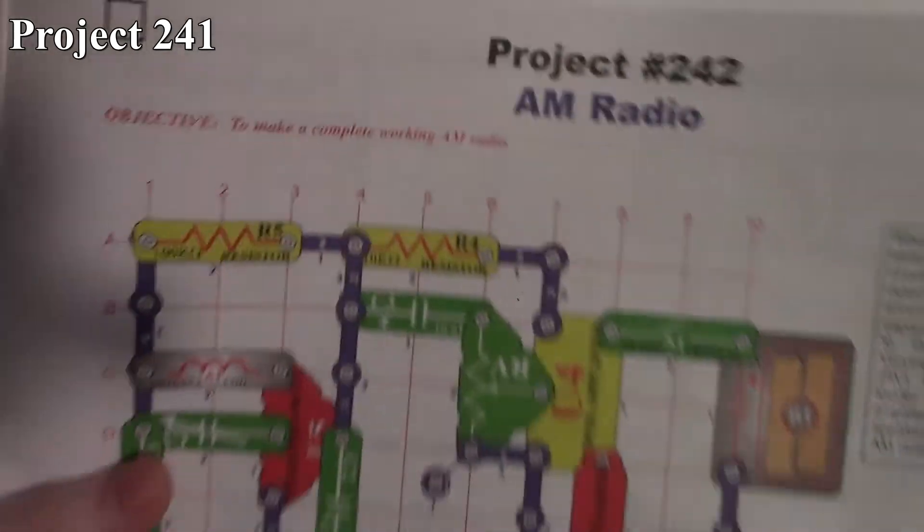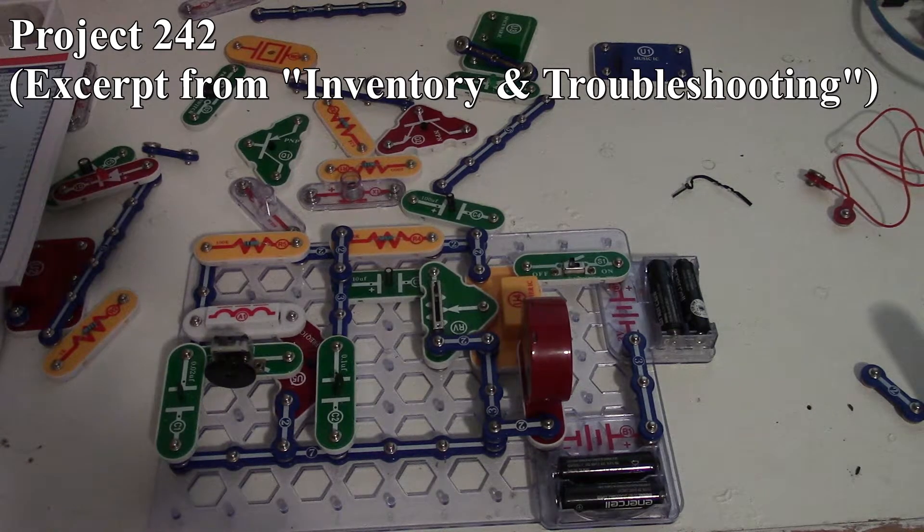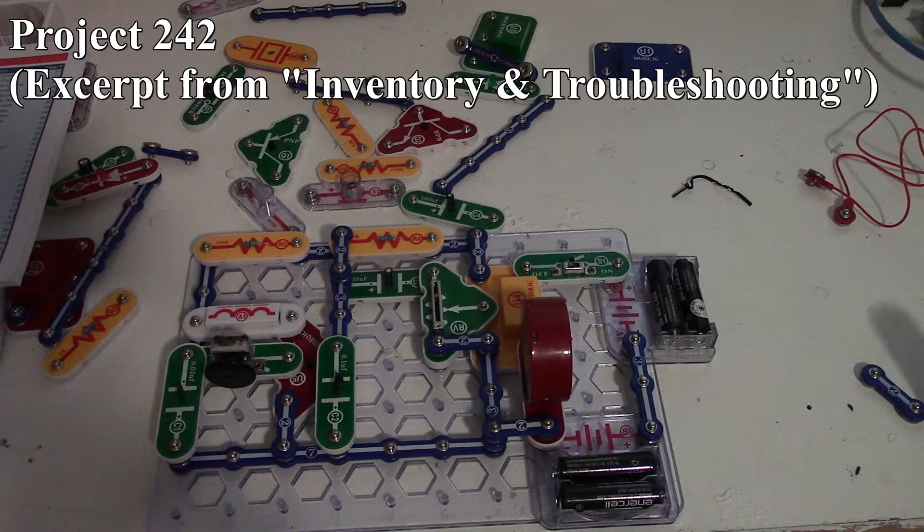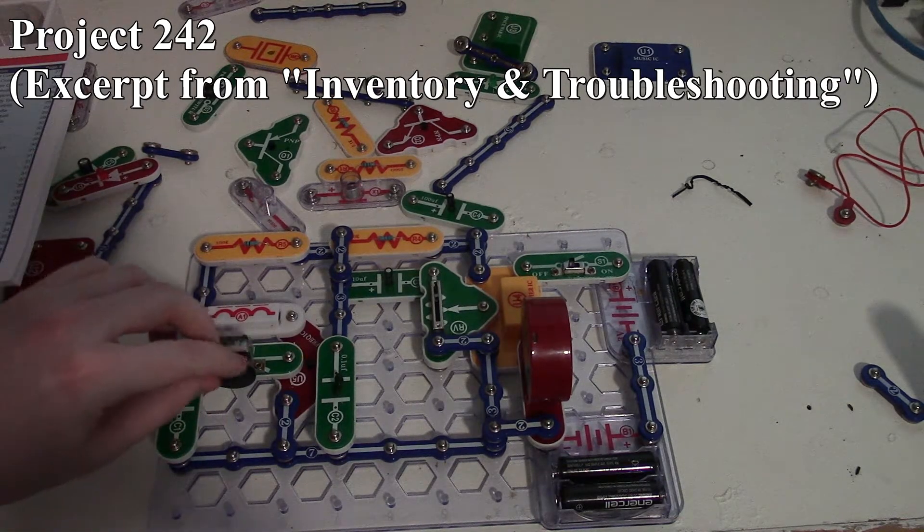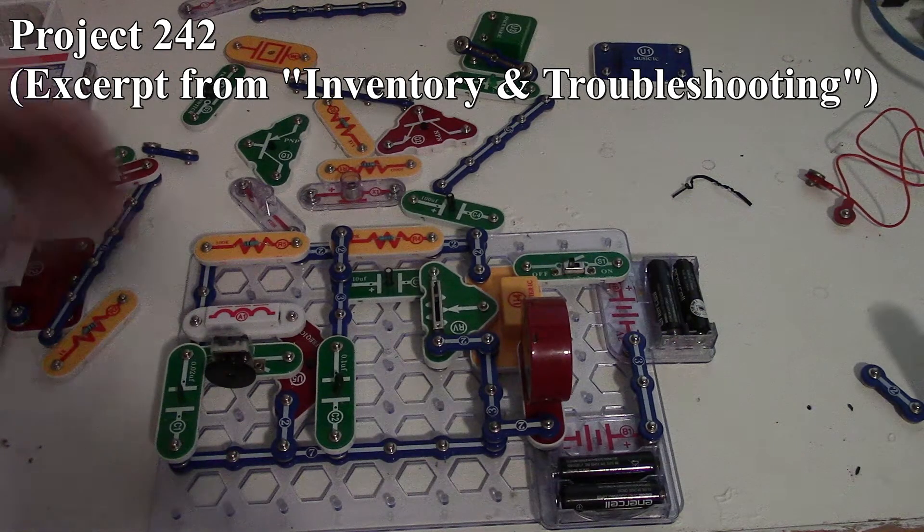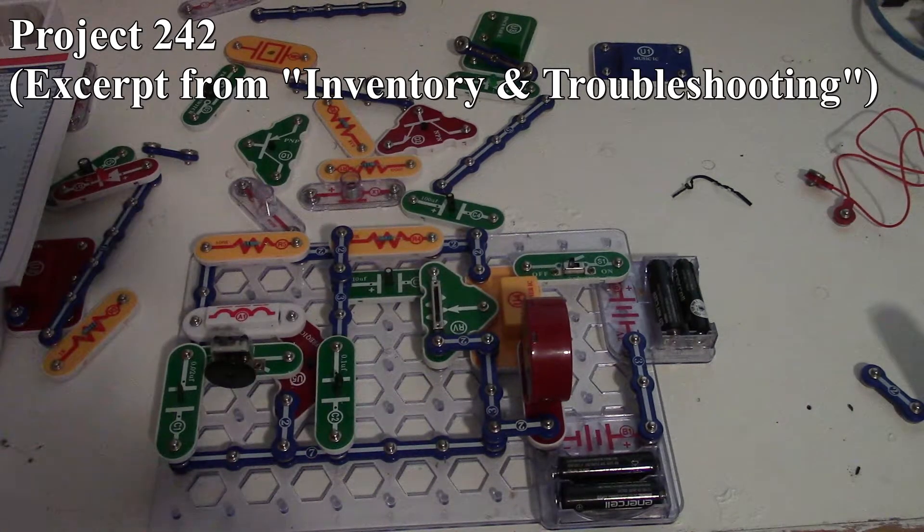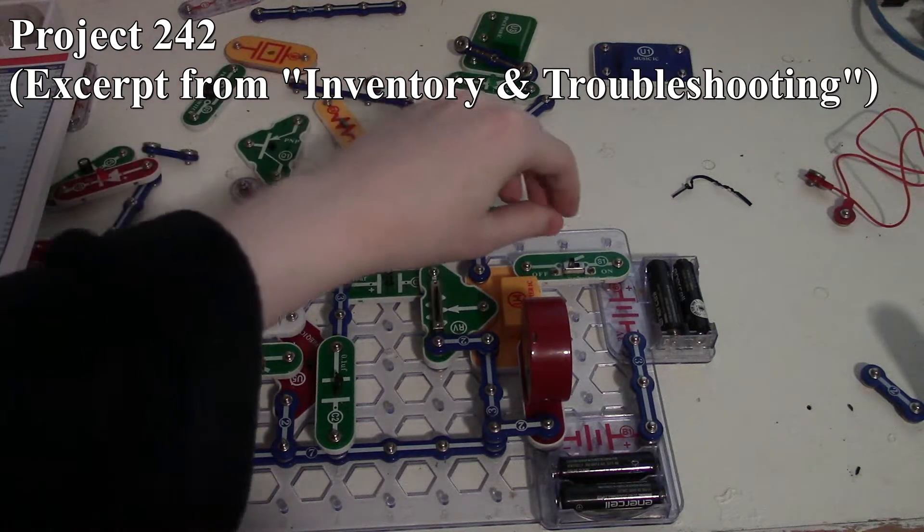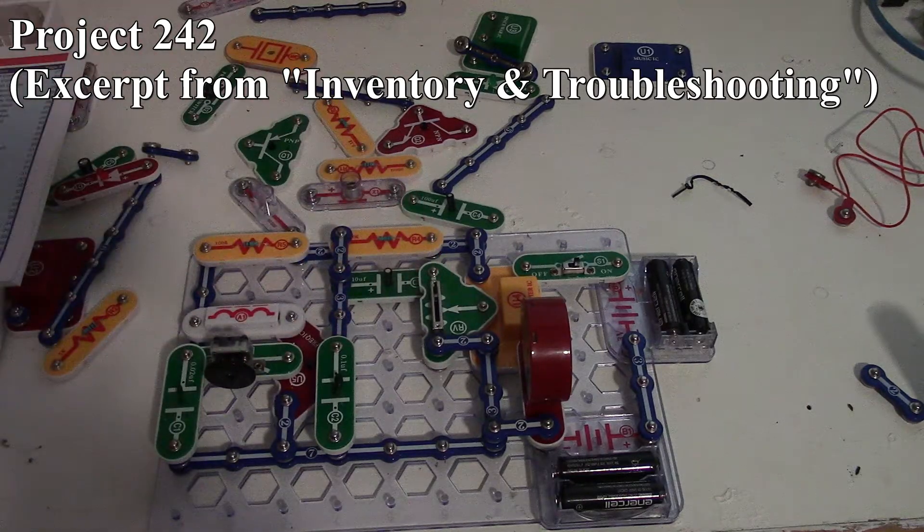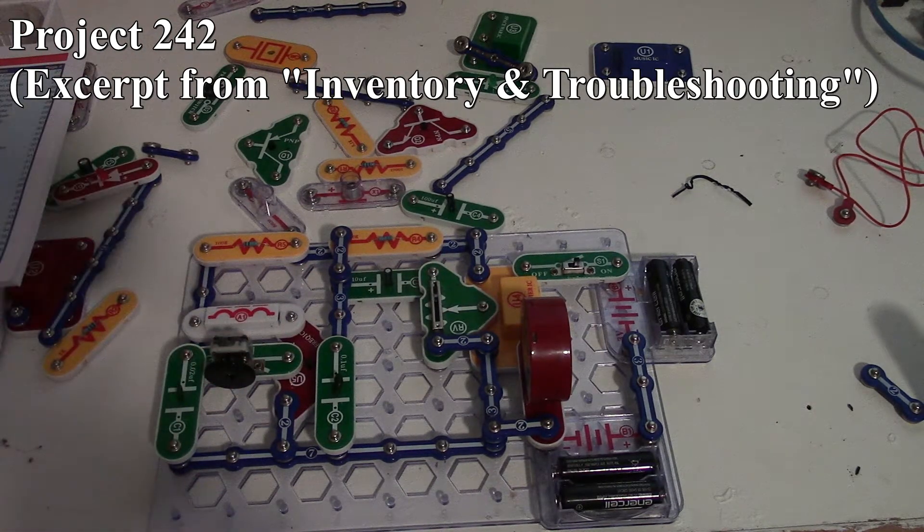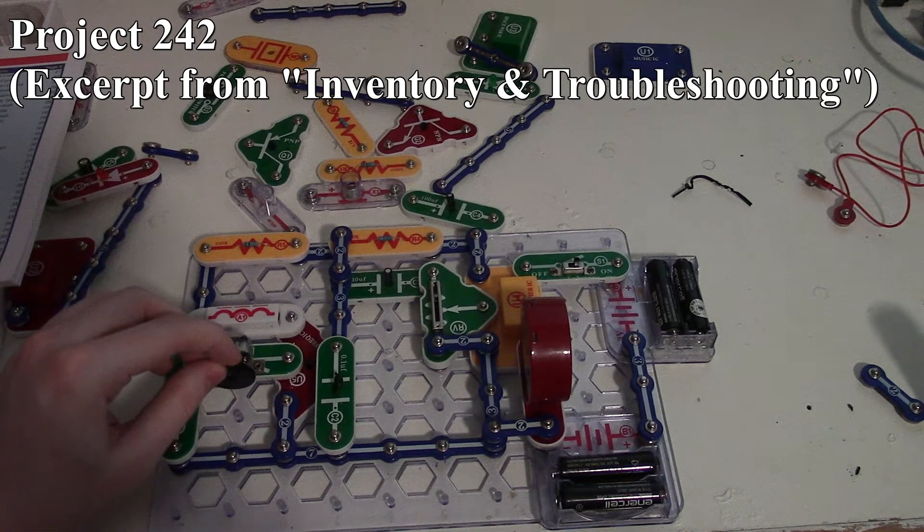That's project 241. Project 242 is going to be the AM radio. If we're testing the high-frequency IC, what it has us do is basically build the AM radio circuit, and we're going to use our variable capacitor to tune the frequency that it's picking up on, and our variable resistor here is used for the power control on the power amplifier for the sound volume on the speaker.